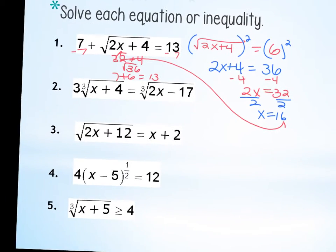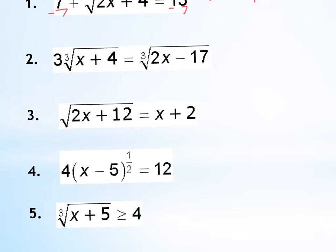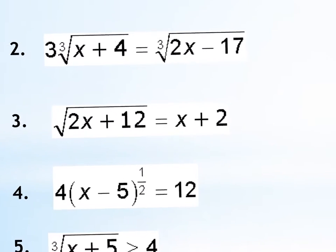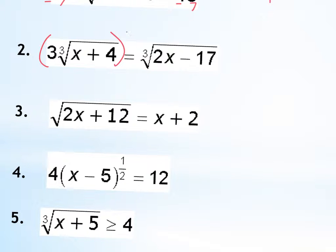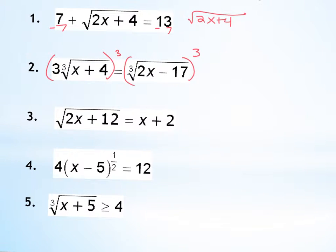Okay, so then the second one, now you're dealing with a cube root. So this time I've got a cube root on either side, right? What happens if I divide by 3? Does it go away? No, I'm going to end up with a 3 on either side no matter what, which means I have to do what to both sides? Cube both sides. So on the left, I end up with 3 cubed, which is 27. And then the cube root and the cube is going to cancel. X plus 4 equals, the cube root is going to cancel, 2X minus 17.